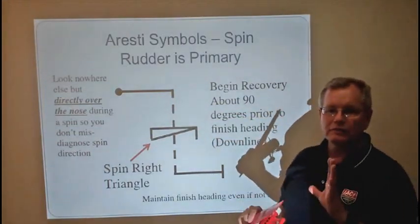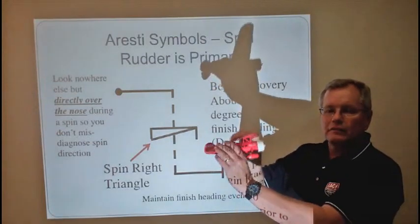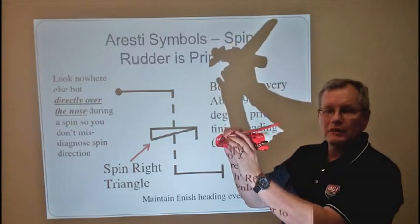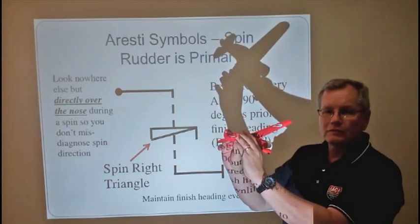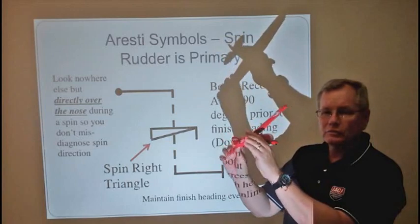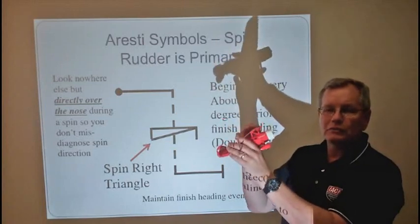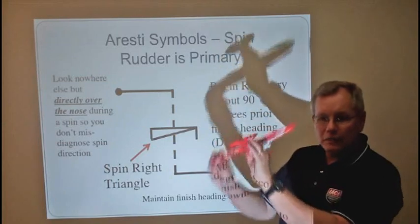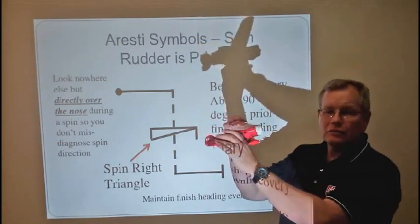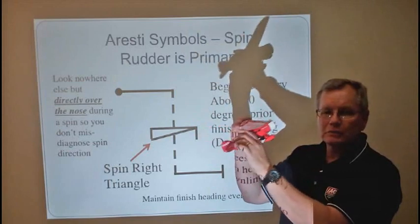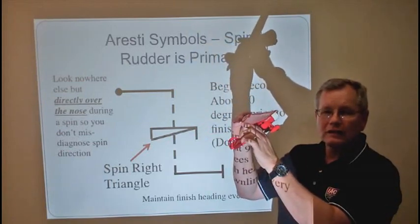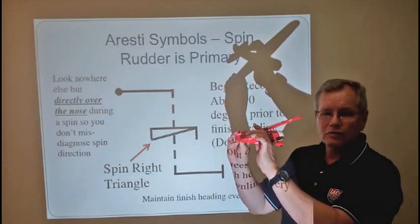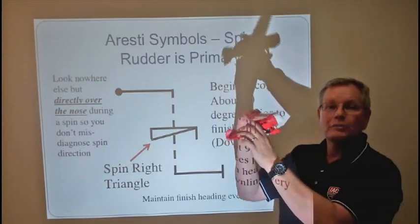The judging standard for the spin entry is very clear. As the yaw commences, the nose is dropping, the wingtip is dropping, and all three drop at the same time. What they don't want to see is the airplane do a hard yaw and then drop into the spin. You need to be slowing down and waiting until the airplane is to that point where it's ready to stall, and then as the rudder goes in, the yaw, the nose drop, and the rolling all happen simultaneously.